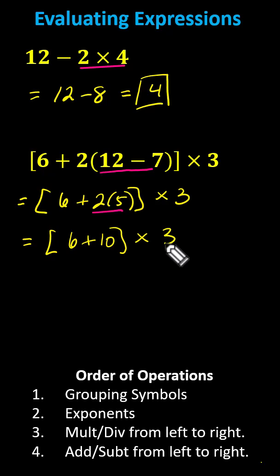Still working inside the brackets, we have 6 plus 10, which is 16. If we want, we can drop the brackets now and just write 16 times 3, or we can still leave the brackets if we want. 16 times 3 is equal to 48.